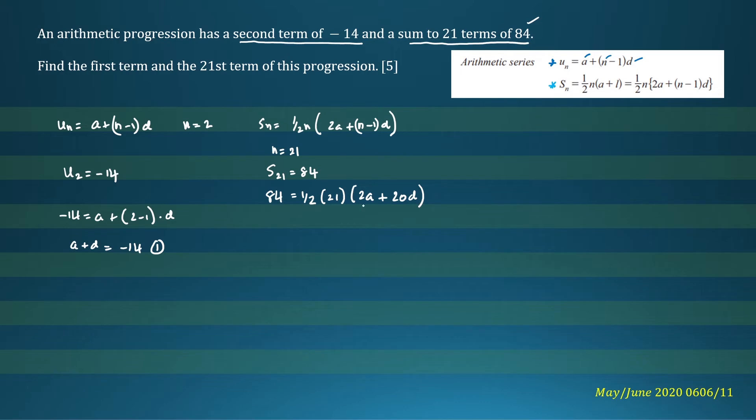But what I'll do here is factorize out 2. So we'll have 84 equals (1/2) times 21 times 2 times (a plus 10d). I did that so I can cancel this 2. Dividing both sides by 21, I'm going to get 4 equals a plus 10d. So a plus 10d equals 4. That's our second equation.